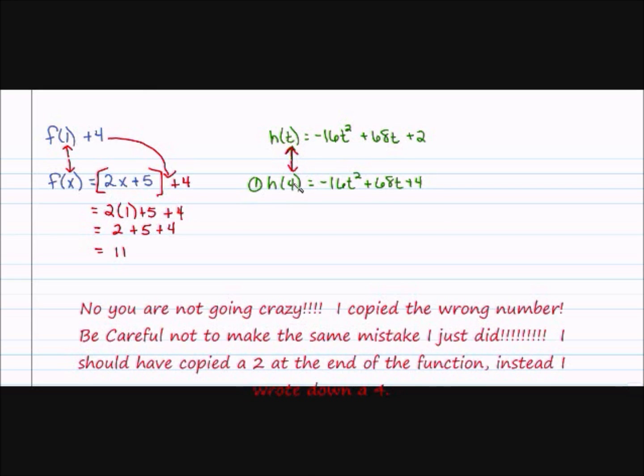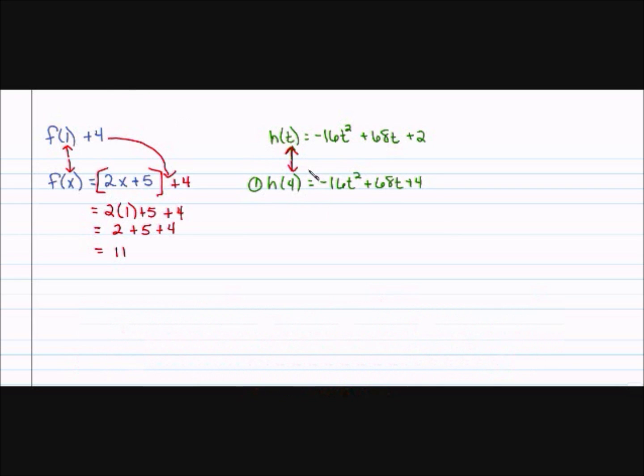So I have negative 16, 4 squared plus 68, there's a t, times 4 plus 4. And I have negative 16, 4 squared means 4 times 4, or 16, plus 68, times 4, plus 4.